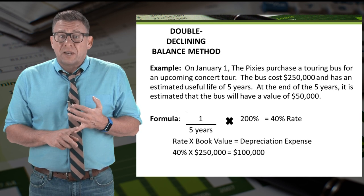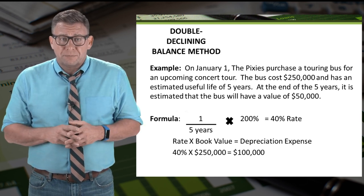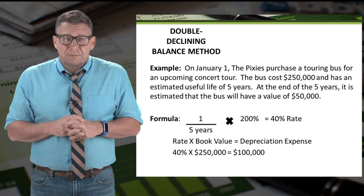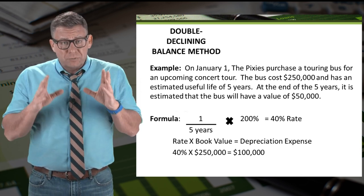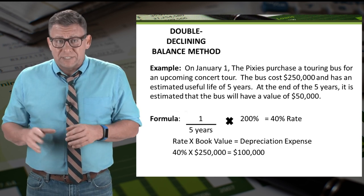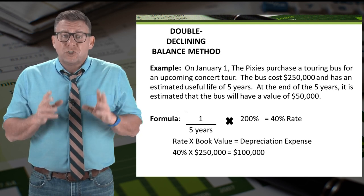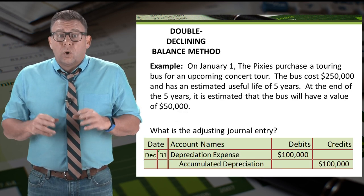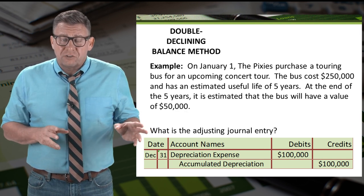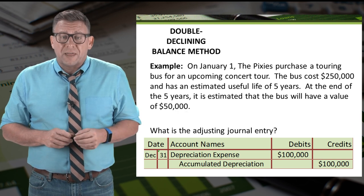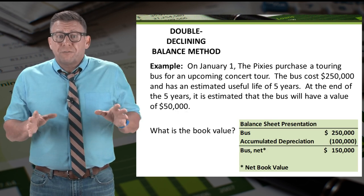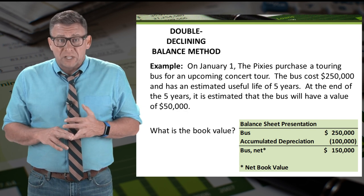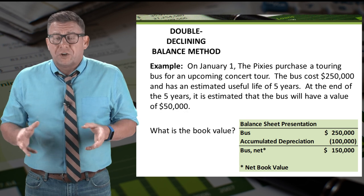The formula is 1 divided by the useful life in years times 200%, which gives us our depreciation expense rate. We then multiply that rate by the book value of the asset. So 1 divided by 5, times 200%, equals 40%. Then 40% times $250,000 is $100,000 of annual depreciation expense. We record the adjusting journal entry by debiting depreciation expense and crediting accumulated depreciation for $100,000. The book value is cost minus accumulated depreciation, so $250,000 minus $100,000 gives us a net book value of $150,000.